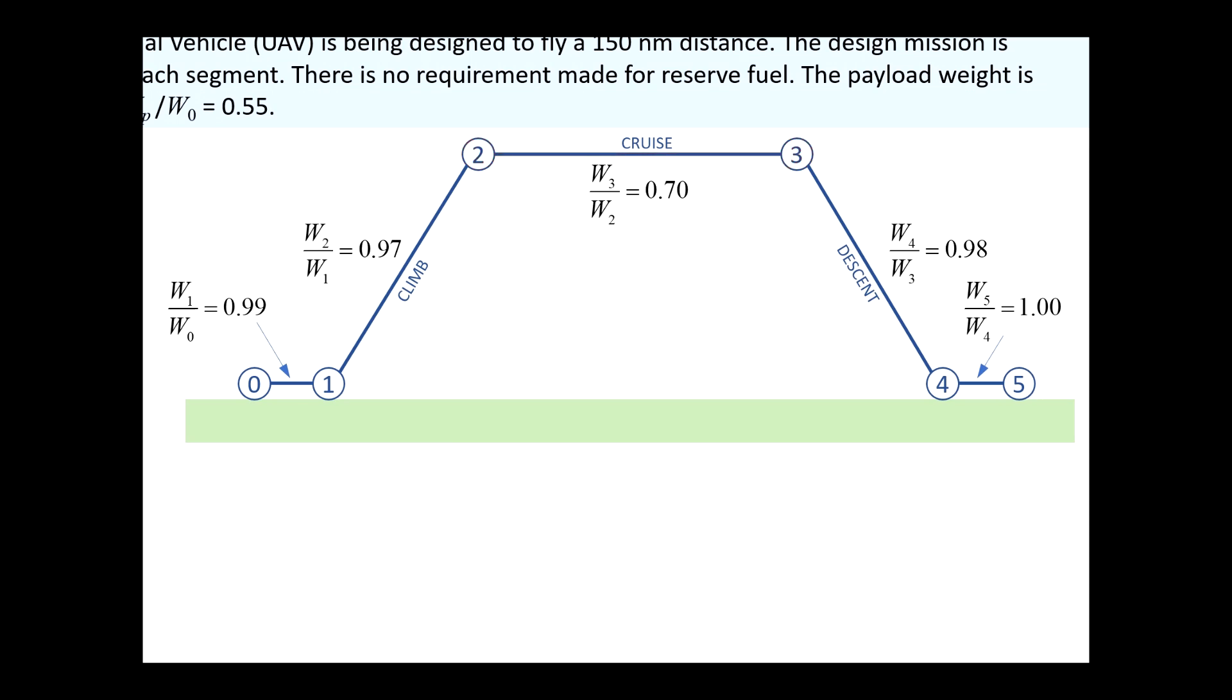The weight ratios shown represent how the weight of the airplane changes as it moves from node to node. For instance, if our aircraft weighs 1,000 pounds at node 0, in this example, then it will weigh 990 pounds at node 1.